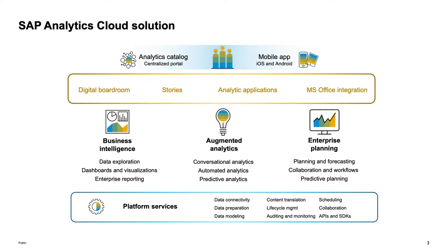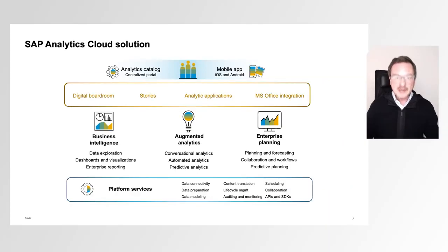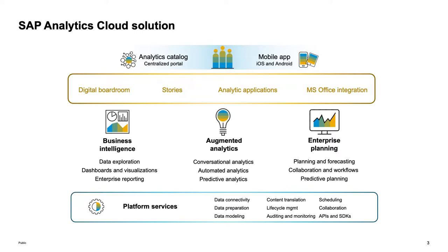Our strategy within SAP is clear. We are going into the cloud, and our strategic solution for analytics in the cloud is SAP Analytics Cloud, covering three pillars: business intelligence, augmented analytics including predictive capabilities, and enterprise planning on one common platform. This shares platform services including data connectivity, preparation and modeling, and the same front end — the digital boardroom, stories, and analytical applications as our browser-based front end, alongside our Excel add-in for Microsoft Office 365.